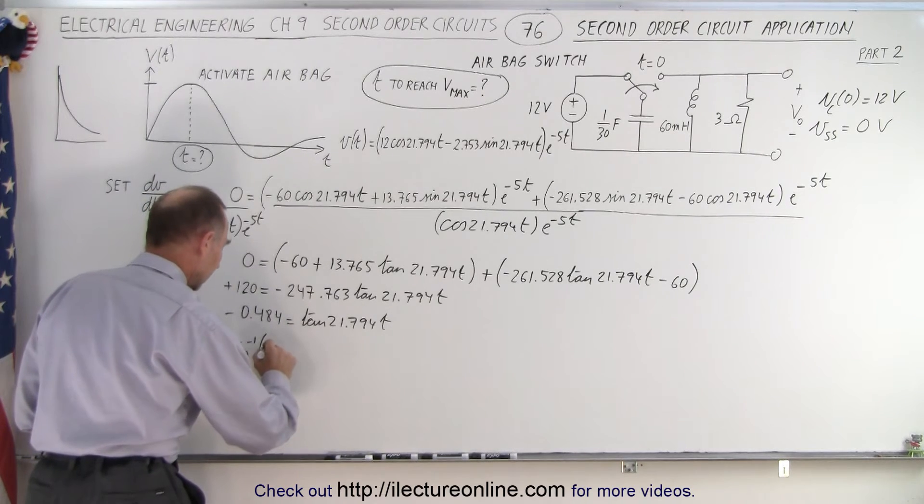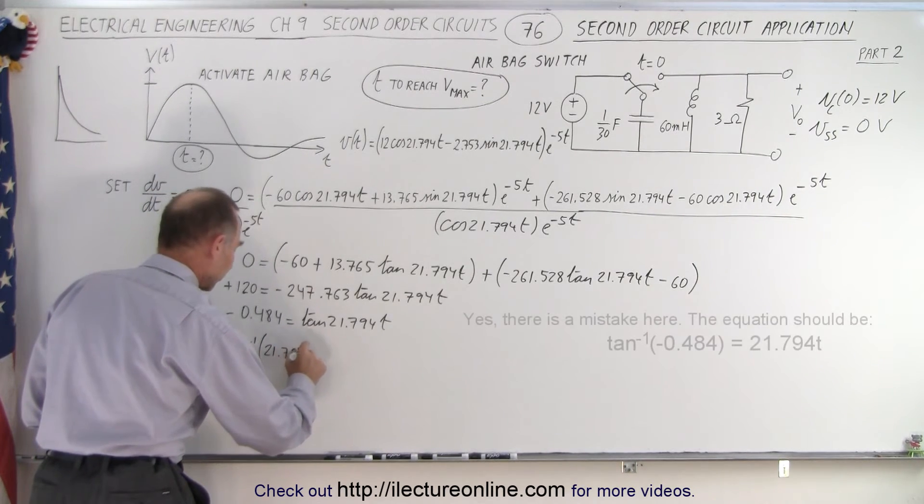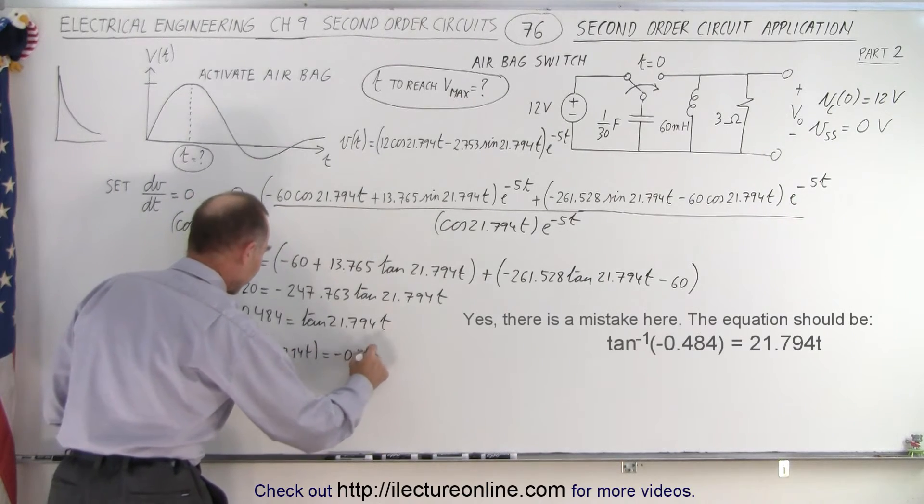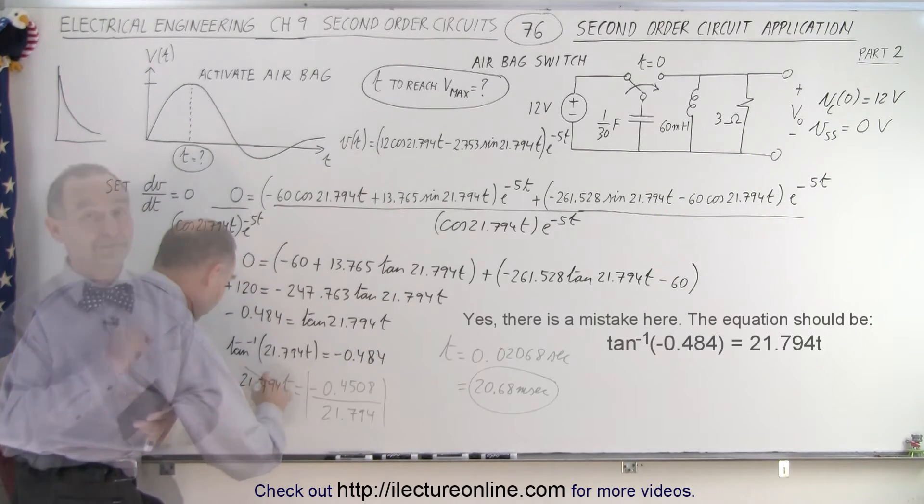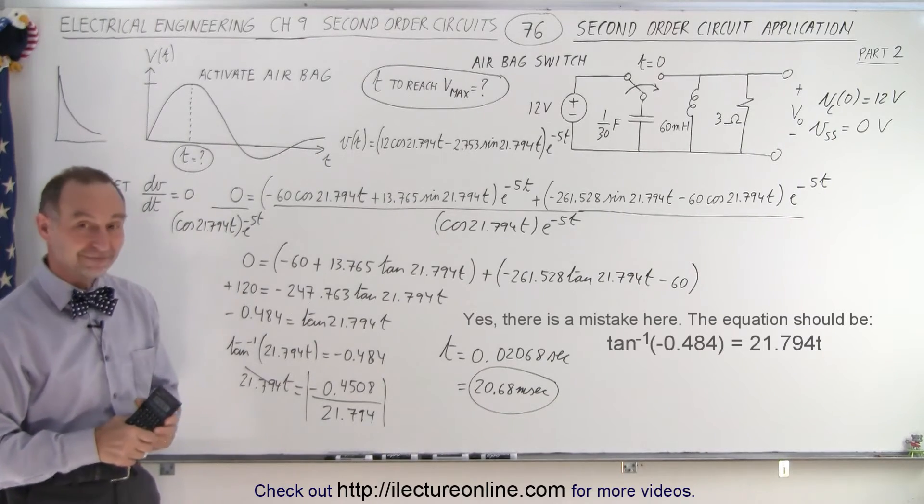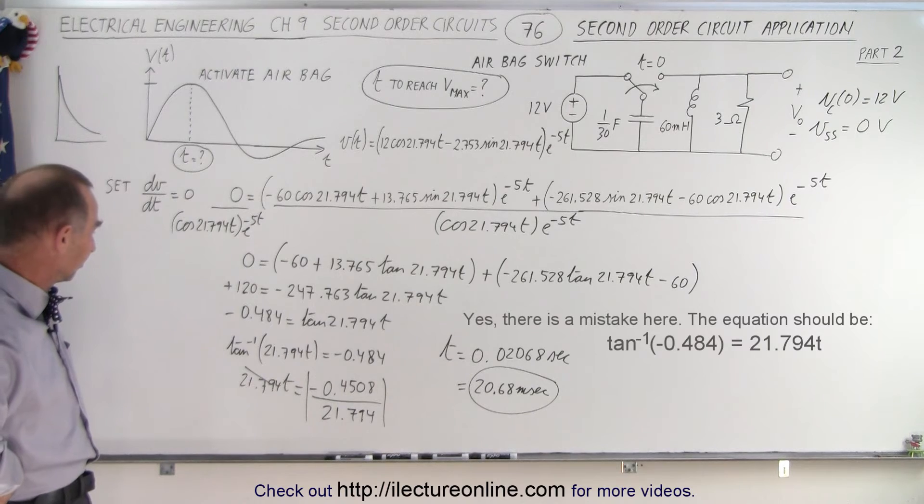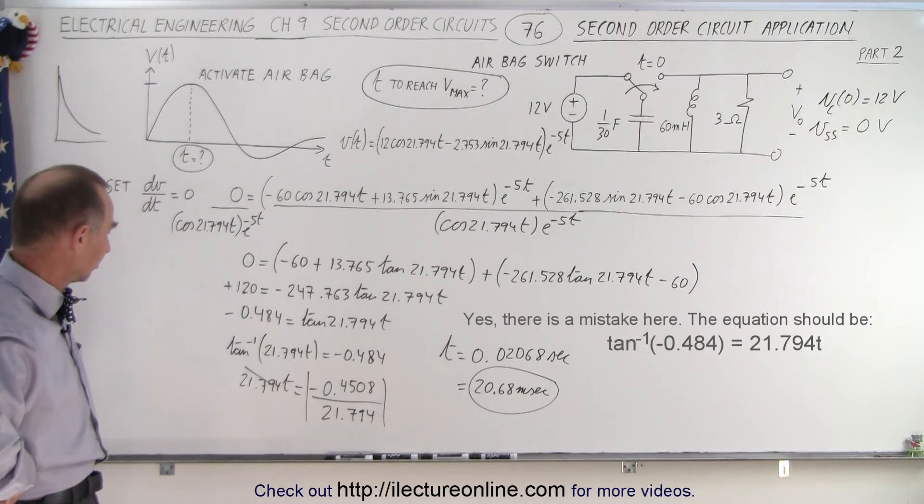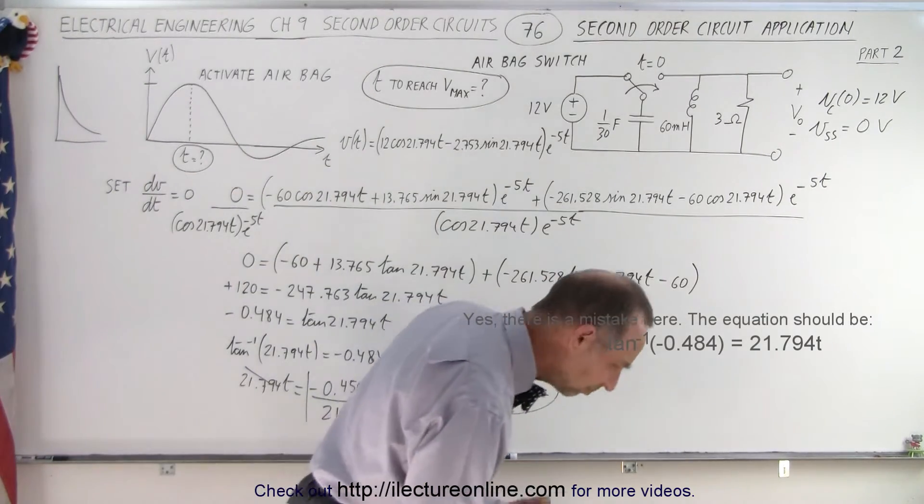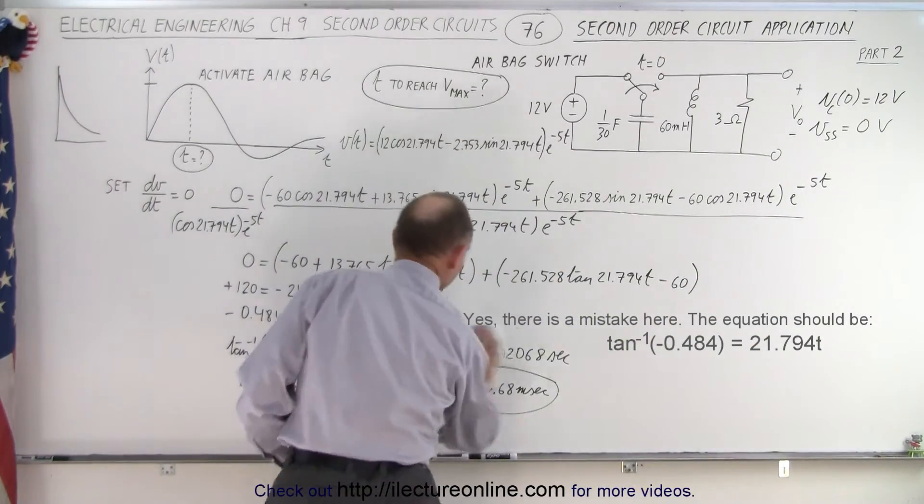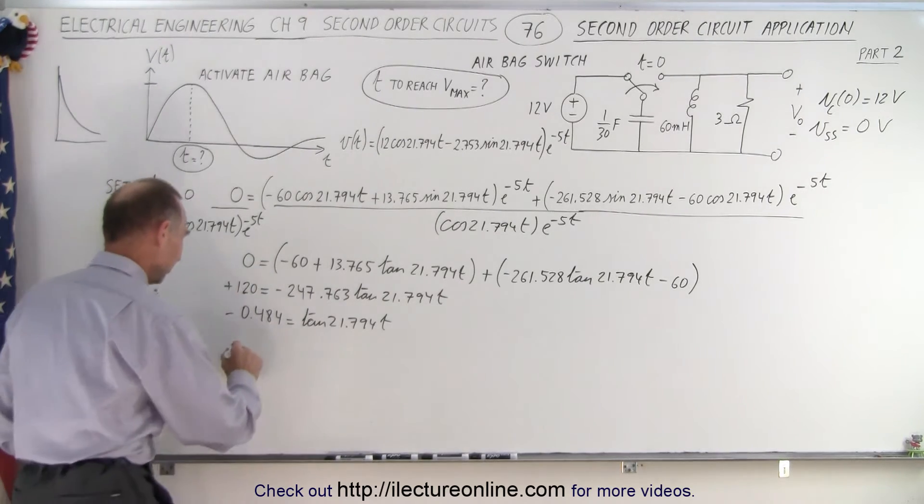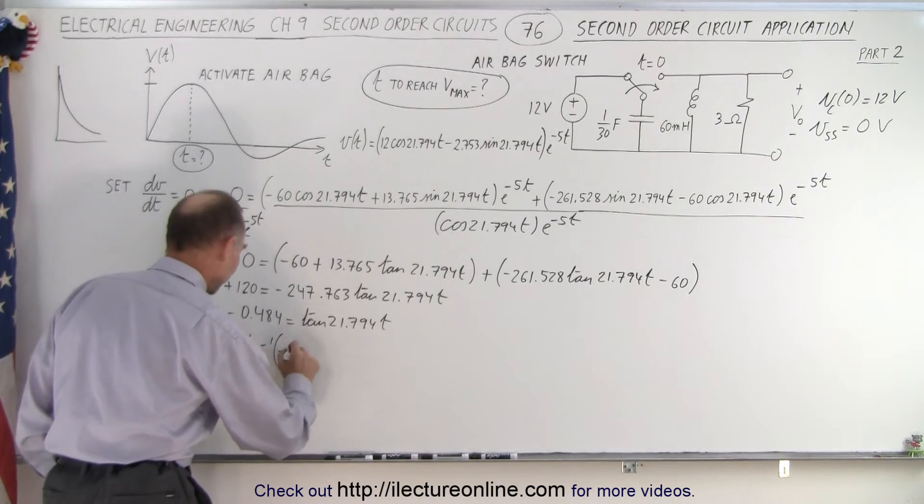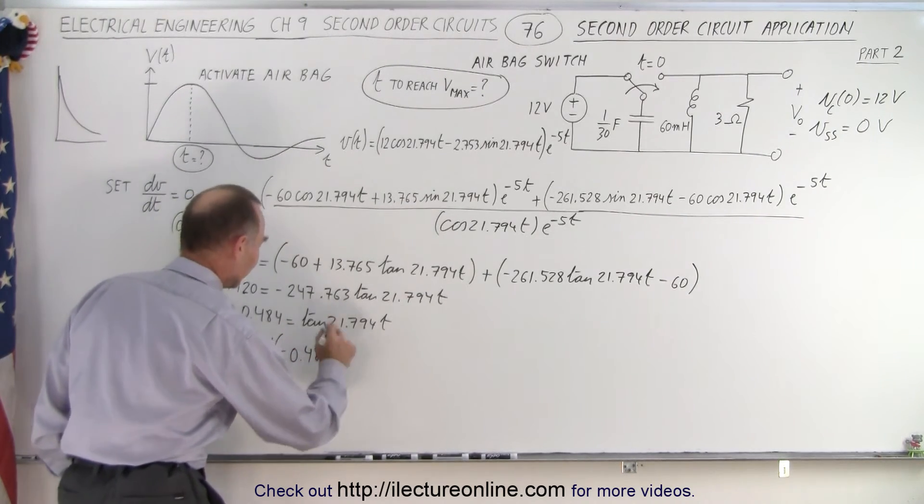Wait, what kind of funky things are you doing over there with the tangent? The inverse tangent should be on the other side. It's not inverse tangent of 21.794t, it's 21.794t equals inverse tangent. Oh yeah, sorry, sorry, that's very funky. Okay, thank you. So now we're taking the inverse tangent of that, so we can say that the inverse tangent of minus 0.484 is equal to the angle of 21.794t.